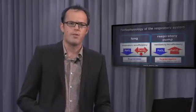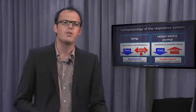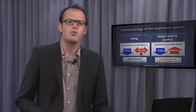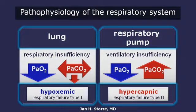If you take a look at the pathophysiology of the respiratory system, you have to be aware that there are two compartments. First of all, we have the lung. If the patient suffers from lung disease, such as lung edema or interstitial lung diseases, there is a problem of oxygen uptake into the blood. You will see a drop in partial pressure of oxygen, and if the patient is capable to hyperventilate, you might see a drop in carbon dioxide.